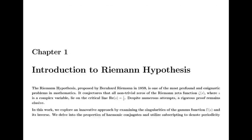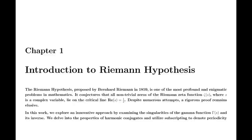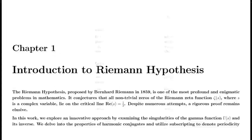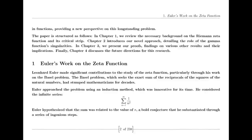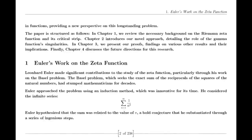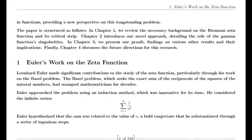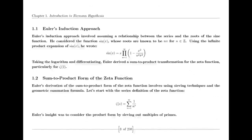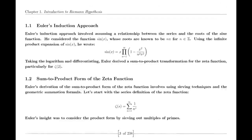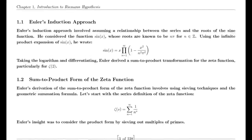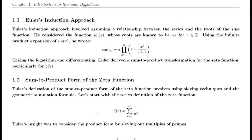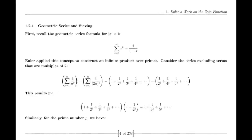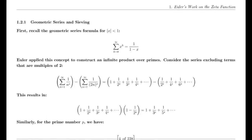One of Riemann's major discoveries was the reflection formula for the zeta function. This formula demonstrates a symmetry between the values of the zeta function at s and 1-s. Specifically, it shows that zeta(1-s) can be expressed in terms of zeta(s) using factors involving pi, the gamma function, and trigonometric functions. This reflection formula is fundamental to the theory of the zeta function and provides deep insights into its structure.